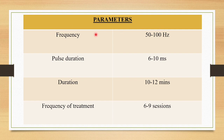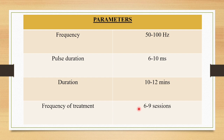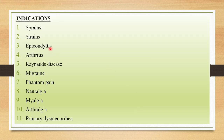Coming to the parameters: the frequency will be 50 to 100 Hz depending on the mode used. The pulse duration will be 6 to 10 milliseconds. This diadynamic current can be applied for 10 to 12 minutes, and the frequency of treatment should be 6 to 9 sessions.